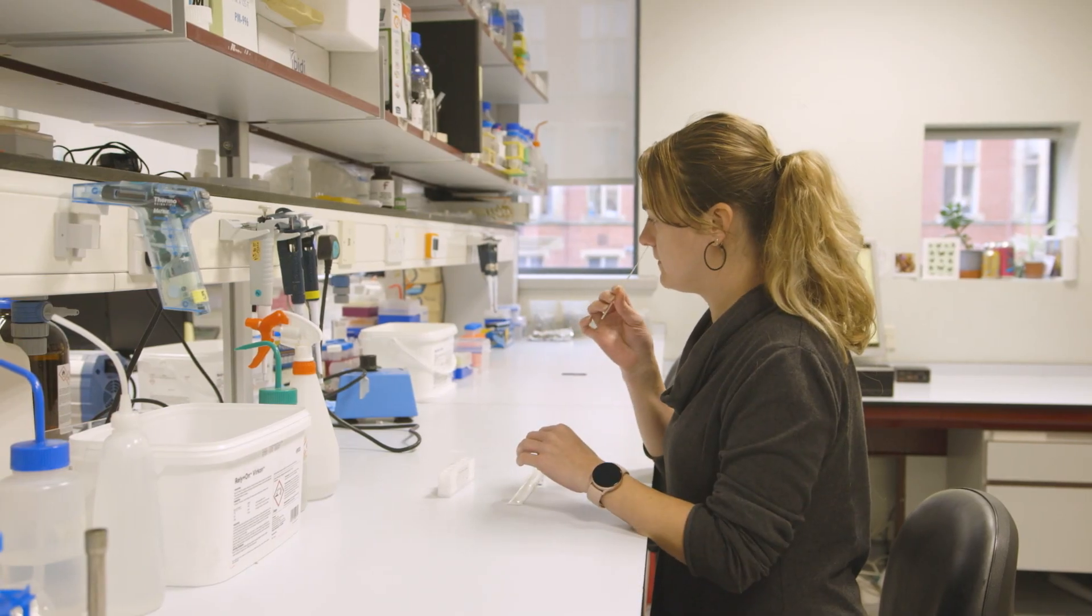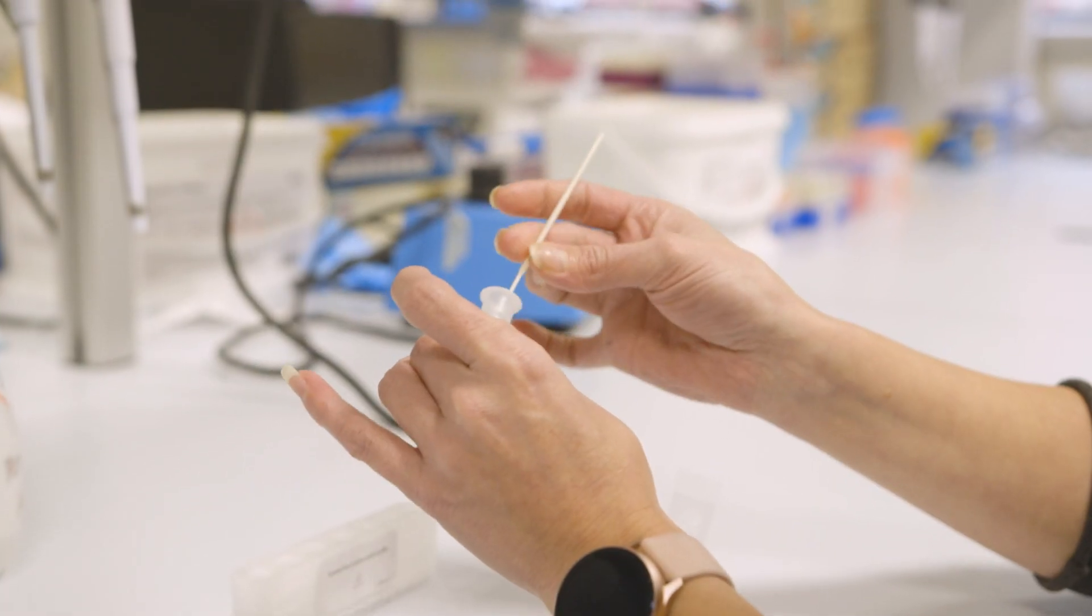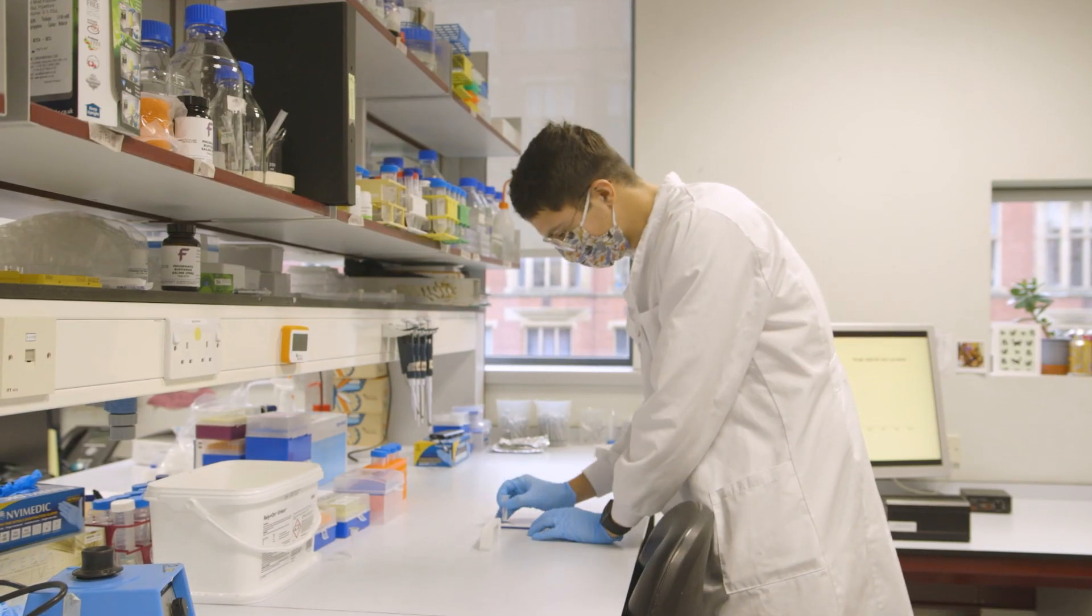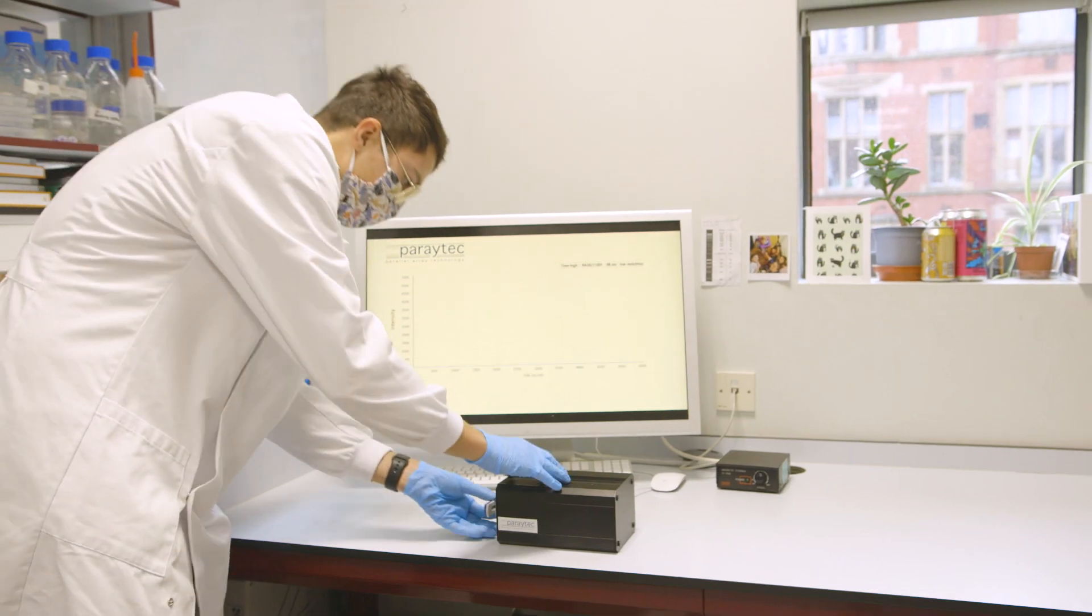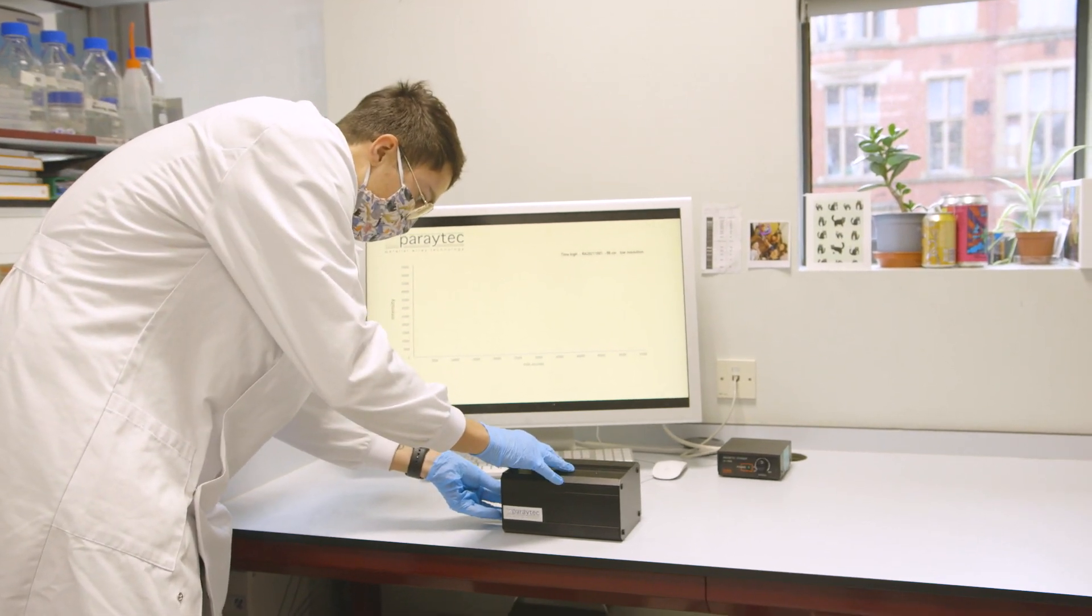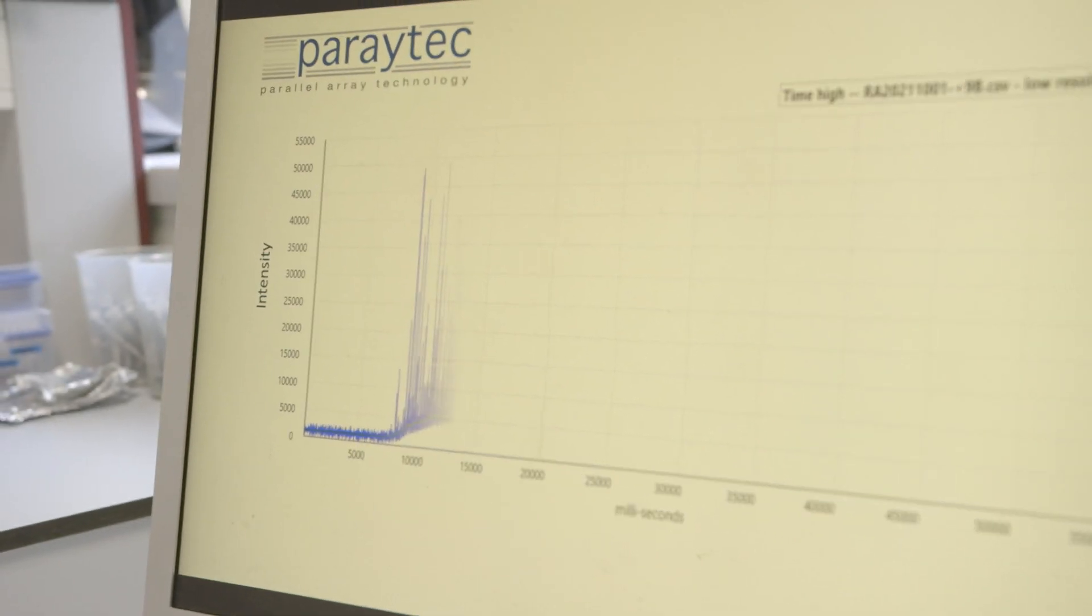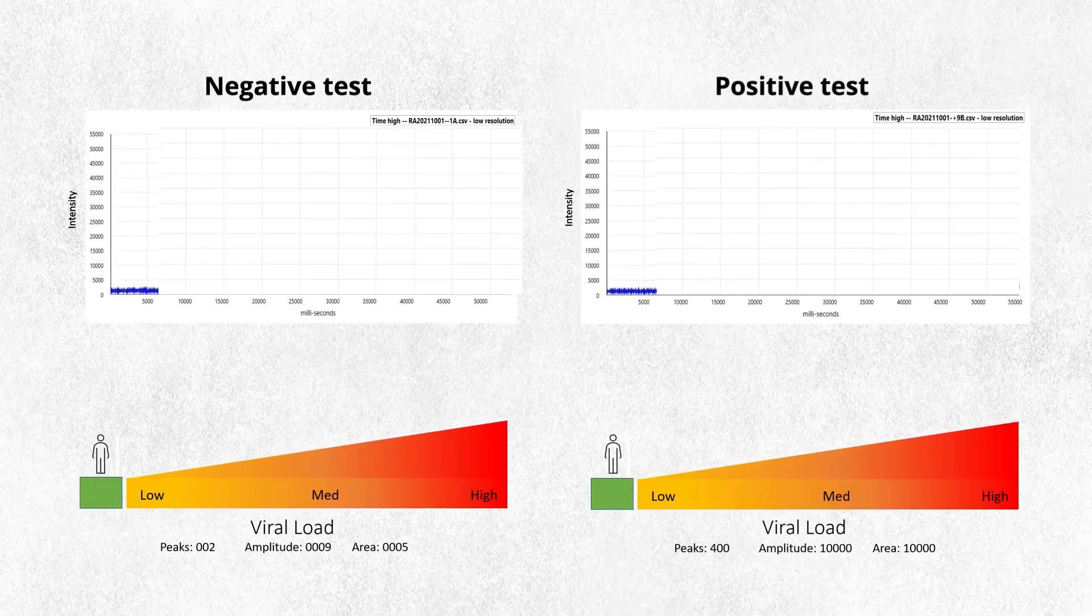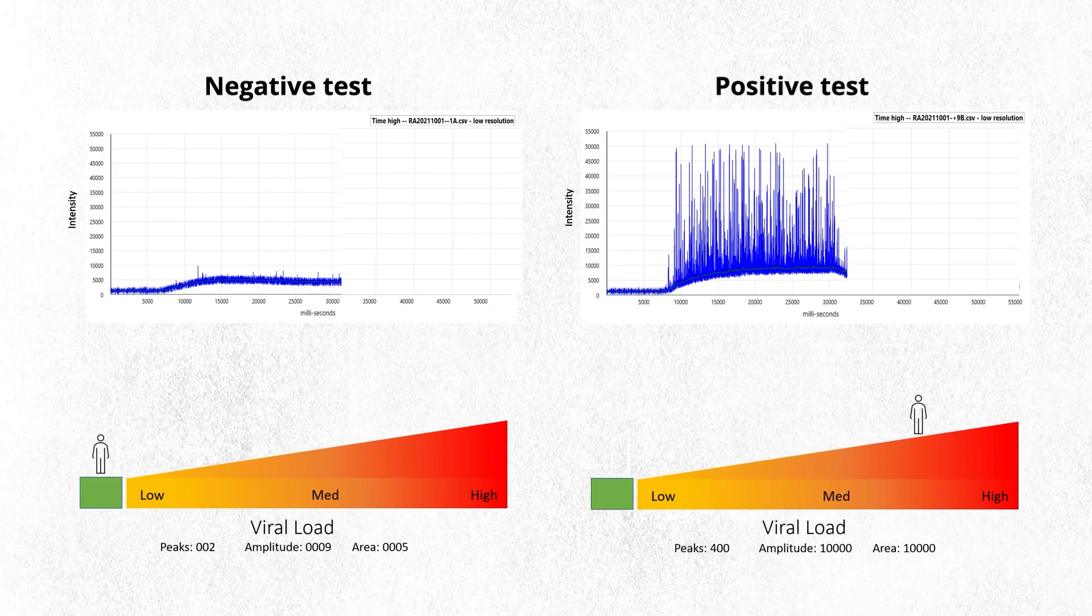What we've developed is a different kind of test that detects intact viral particles. This involves using a swab like you would for the lateral flow or the PCR and then you insert it into a cartridge. Within five minutes we can inform people whether they are positive or negative and if they're positive, the extent of their viral load.